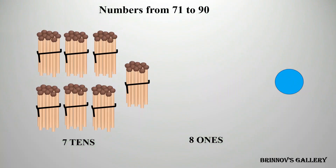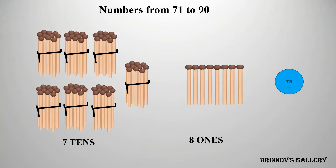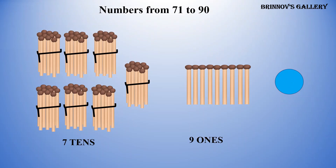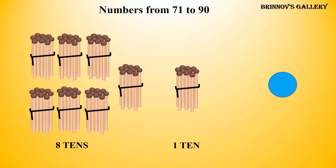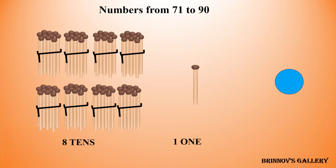7 tens, 8 ones — 78. 7 tens, 9 ones — 79. 7 tens, 10 ones — 80. 8 tens, 1 one — 81.